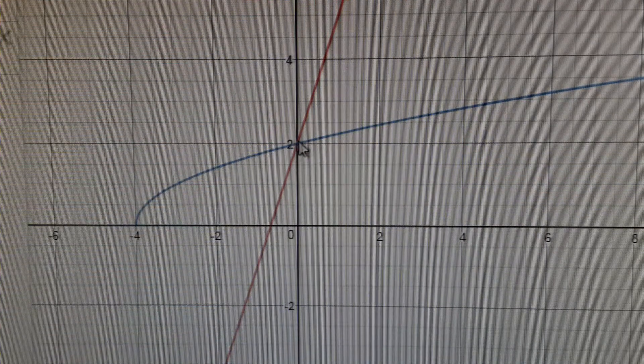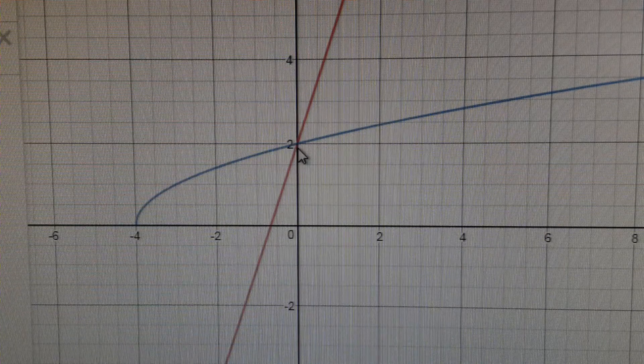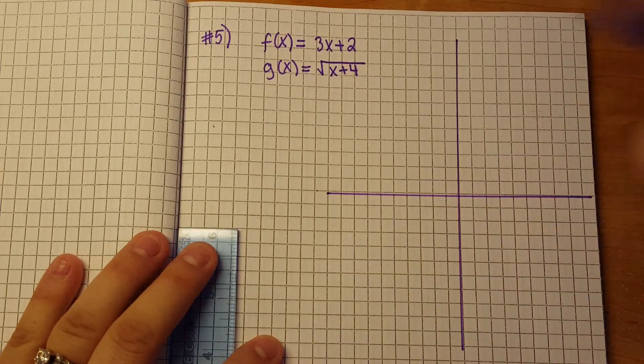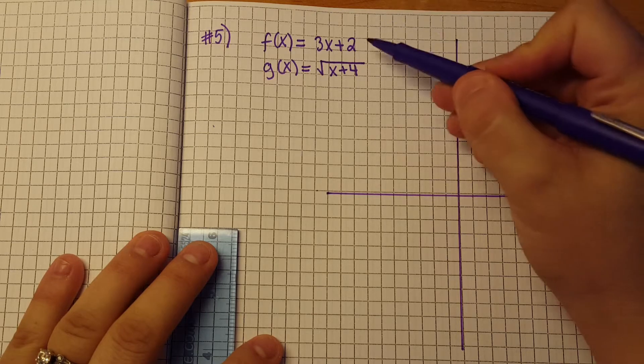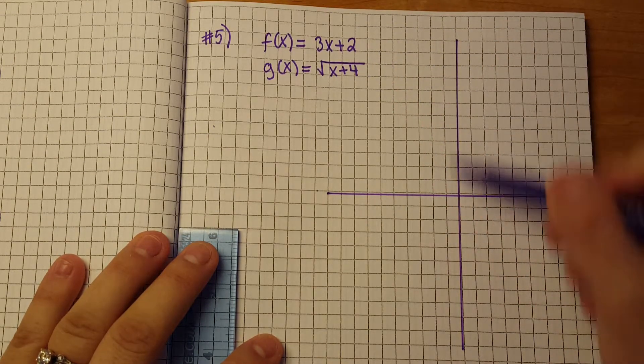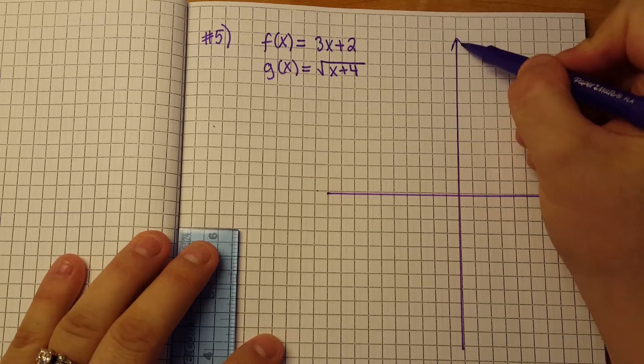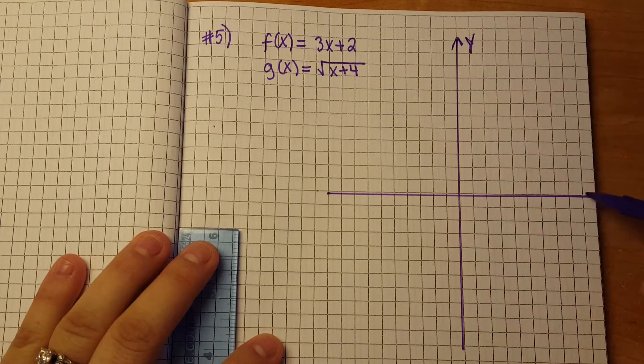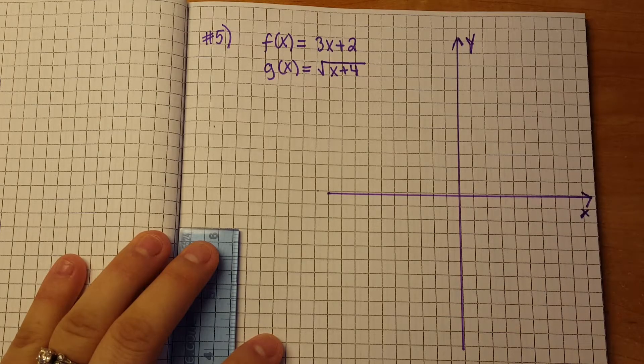So this is definitely going to be our intersection but I am going to graph it on paper so you guys can see it and I'm also going to show you algebraically how that solution works. Alright, so here we go. So we have our first equation here, f of x is equal to 3x plus 2. Here is my graph. We know that the vertical line is our y axis, the horizontal line is our x axis.